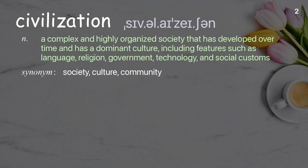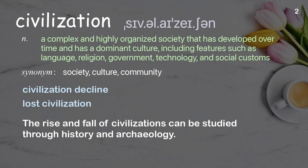Civilization: a complex and highly organized society that has developed over time and has a dominant culture, including features such as language, religion, government, technology, and social customs. Examples: civilization decline, lost civilization. The rise and fall of civilizations can be studied through history and archaeology.